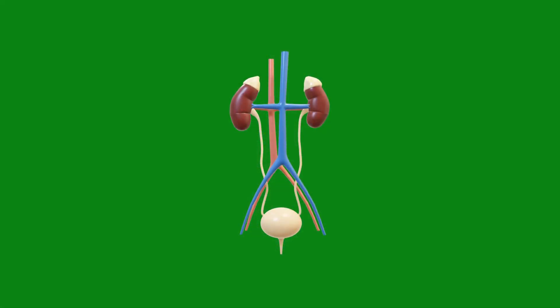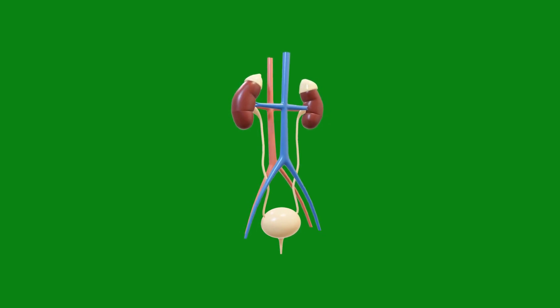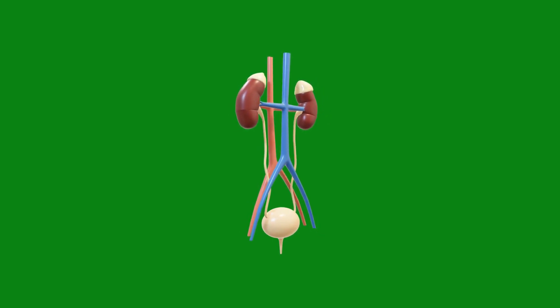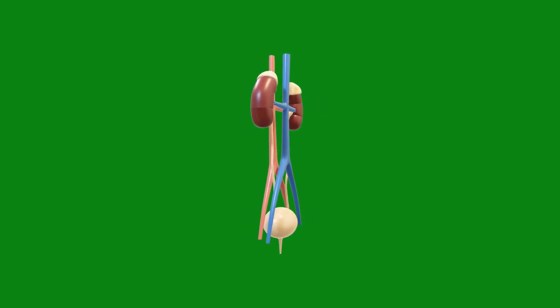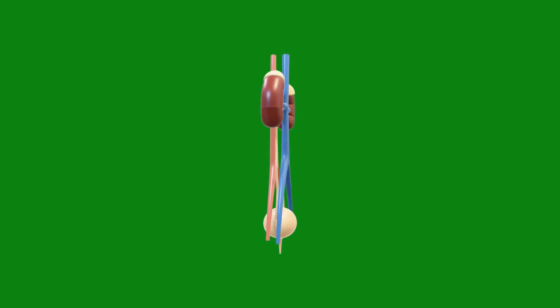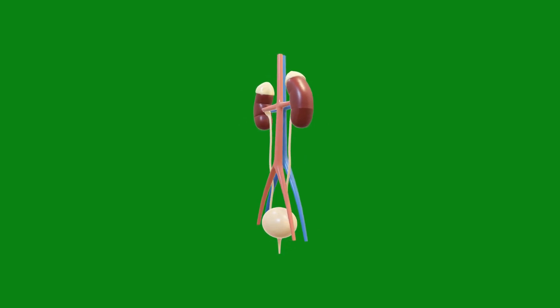Urinary tract abnormalities — structural abnormalities in the urinary tract, such as blockages or narrowing of the ureters, can increase the risk of kidney stone formation.